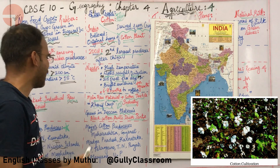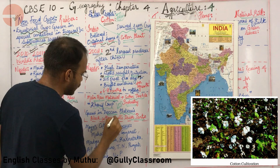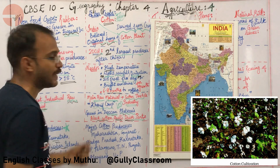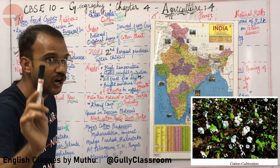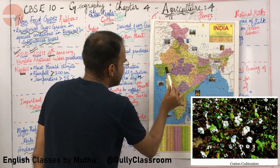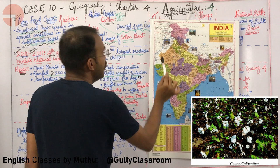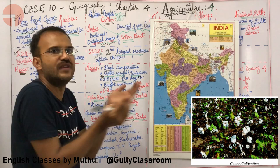Cotton is also grown on the Deccan Plateau where there is black soil. Black soil is present in Gujarat and Maharashtra. Cotton is majorly grown in Gujarat and Maharashtra because black soil is very good for cotton cultivation.